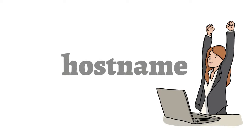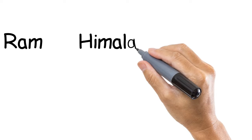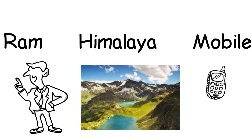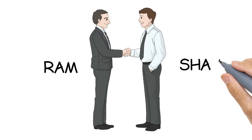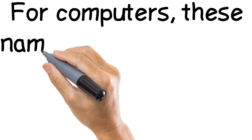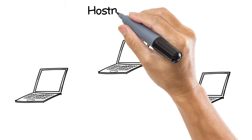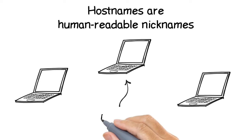In this video, we are going to talk about Hostname. A name is a label that is used to identify a person, a place, or a thing. We humans need names to address each other individually. Similarly, computers also need names so that one machine can differentiate from the other. For computers, these names — such as bob, knob, lol, app — are called hostnames. Hostnames are human-readable nicknames that are used to identify a particular system.